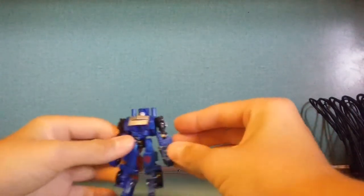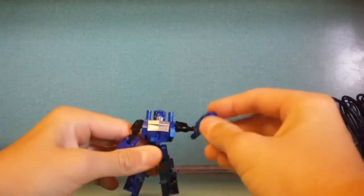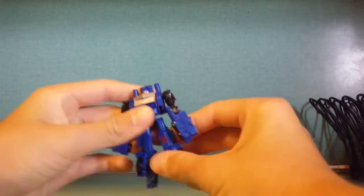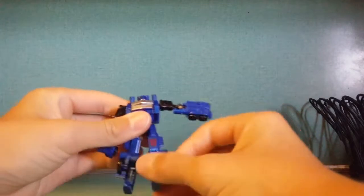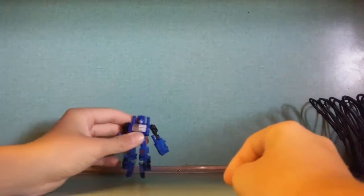He does have a bit of articulation, he bends out the elbow, his shoulder is on a ball joint, so you can get a good range of motion with that, his thigh is on a ball joint, and that's it. That's literally it for articulation.